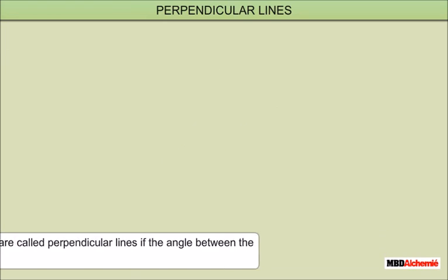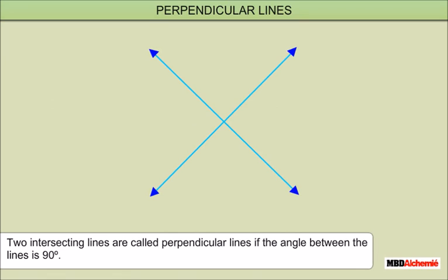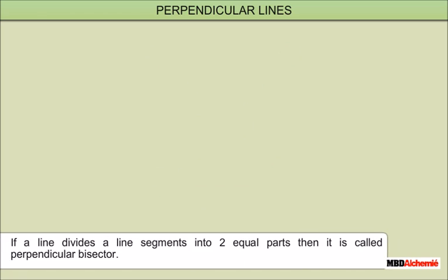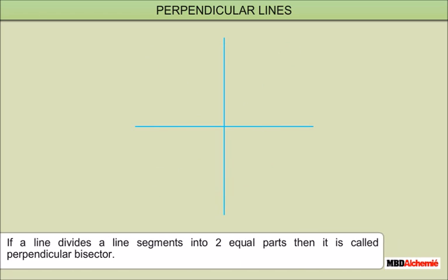Perpendicular Lines: Two intersecting lines are called Perpendicular Lines if the angle between them is 90 degrees. If PQ is perpendicular to RS, we write it using the perpendicular symbol. Two intersecting lines form four angles; if one of them is 90 degrees, then all others are also 90 degrees. If a line divides a line segment into two equal parts, it is called a Perpendicular Bisector.